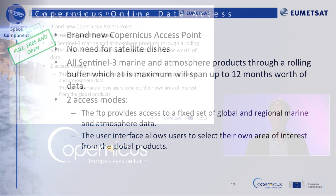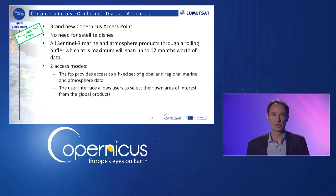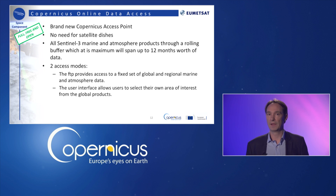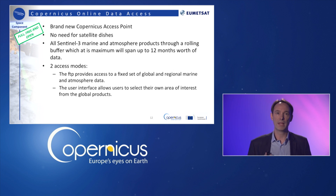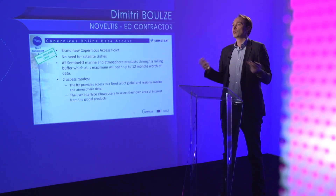The second data access point from EUMETSAT, and the latest available, is the Copernicus Online Data Access. This download service offers all Sentinel free marine and atmosphere products through a rolling buffer, which at maximum will span up to 12 months worth of data. Access may be through an FTP client or via a user interface. The FTP provides access to a fixed set of global and regional marine and atmosphere data. The user interface allows users to select their own area of interest from the global products. Both services offer easy download through a scripts interface. Please note that EUMETSAT requires only a single registration that allows you to access data in the most convenient mode for you.